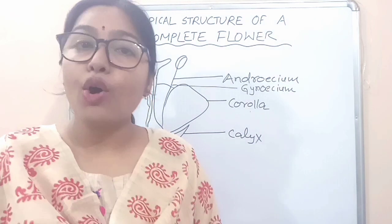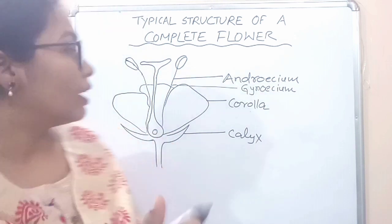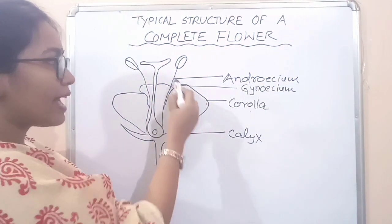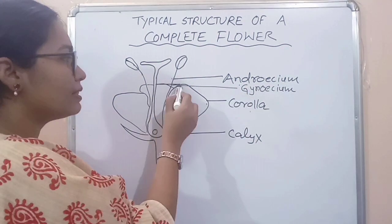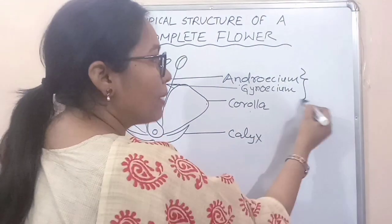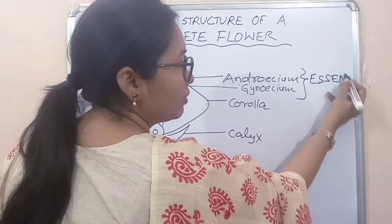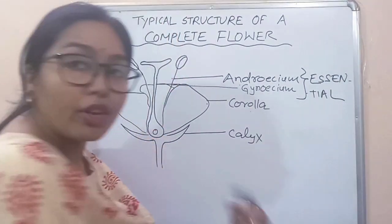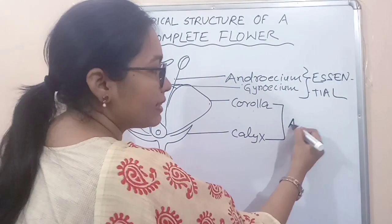have to know the structure of the sexual organ of plants, that is the flower. So these are corolla, calyx, and this is androecium, and this is gynoecium. Androecium and gynoecium are the essential ones, essential for sexual reproduction, and these are accessory.